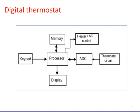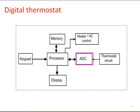The surrounding temperature is sensed by a thermostat — a temperature sensor — and is converted to a potential analog voltage. The processor cannot manipulate this signal directly; it is converted to an equivalent digital number through a process called analog to digital conversion (ADC).